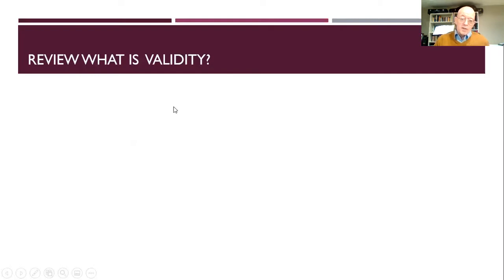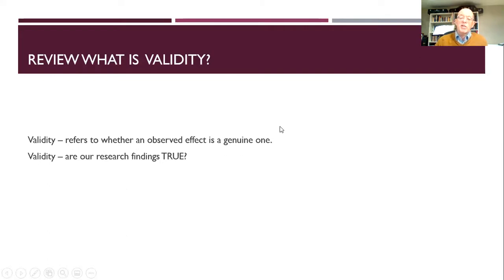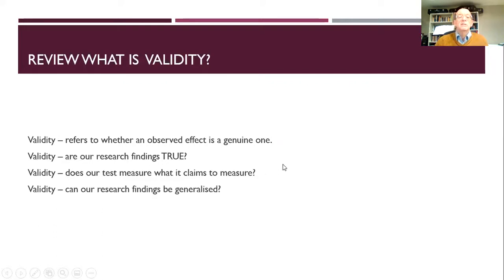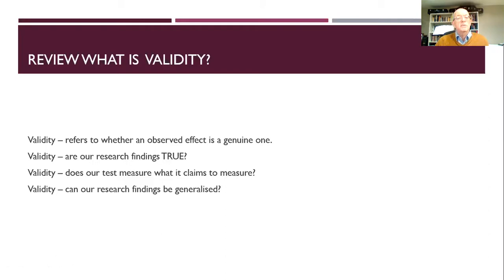So, validity — which is true? Validity refers to whether an observed effect is a genuine one. Validity asks: are our research findings true? Validity asks: does our test measure what it claims to measure? Validity means our research findings can be generalized. Actually, all of these are true, because validity is quite a complicated thing — but all of these ideas are accurate, and we'll play around with them a little bit more.